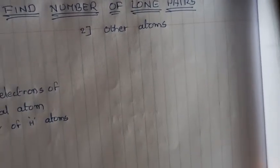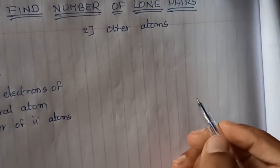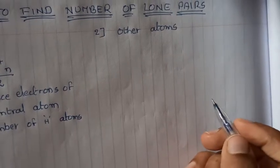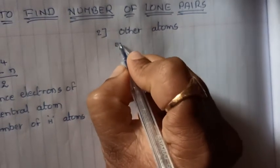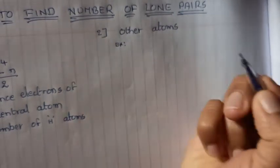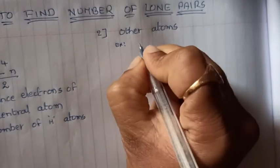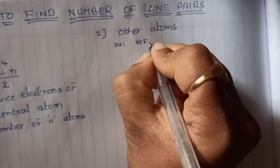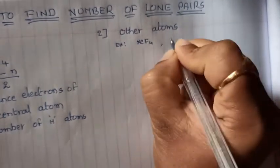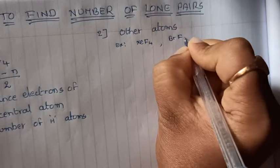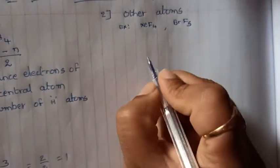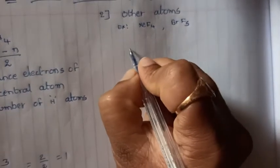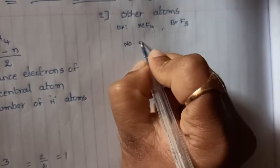Now, if the molecule has a central atom surrounded by atoms other than hydrogen, what is the formula to calculate the number of lone pairs? Let's take xenon tetrafluoride as an example.